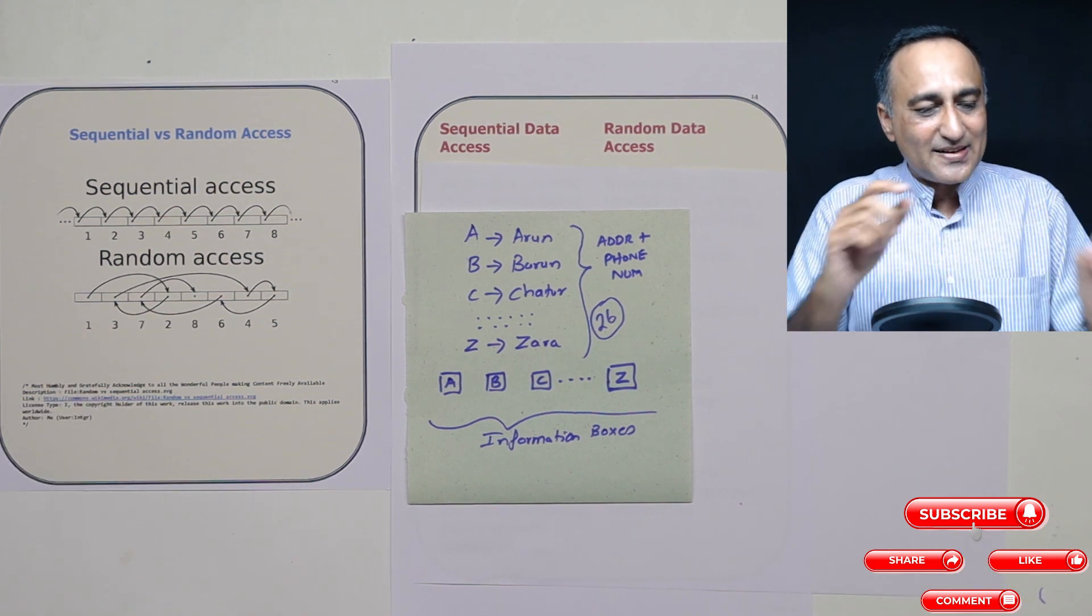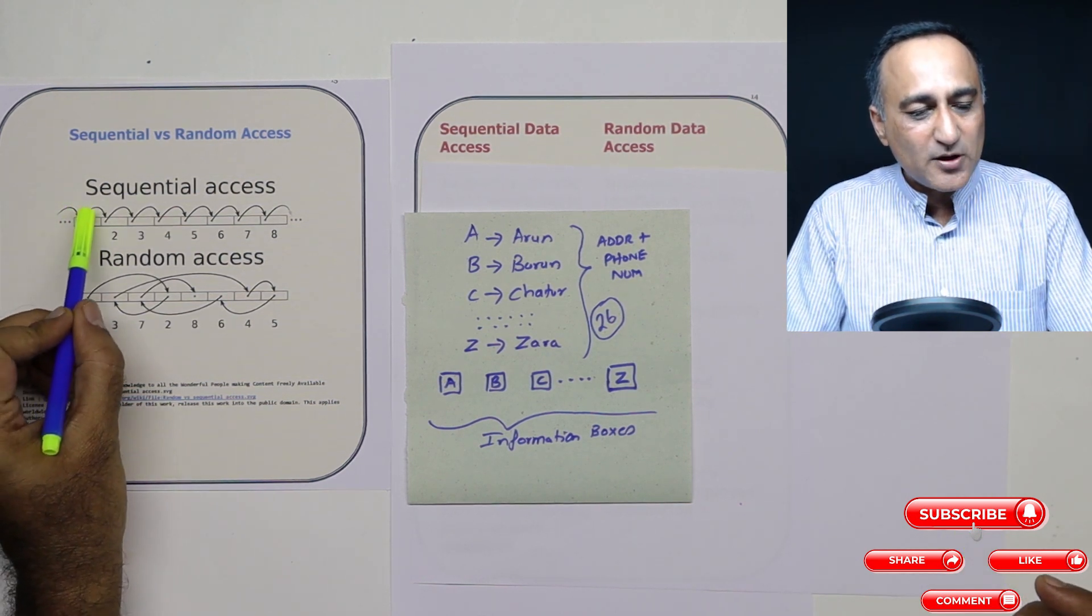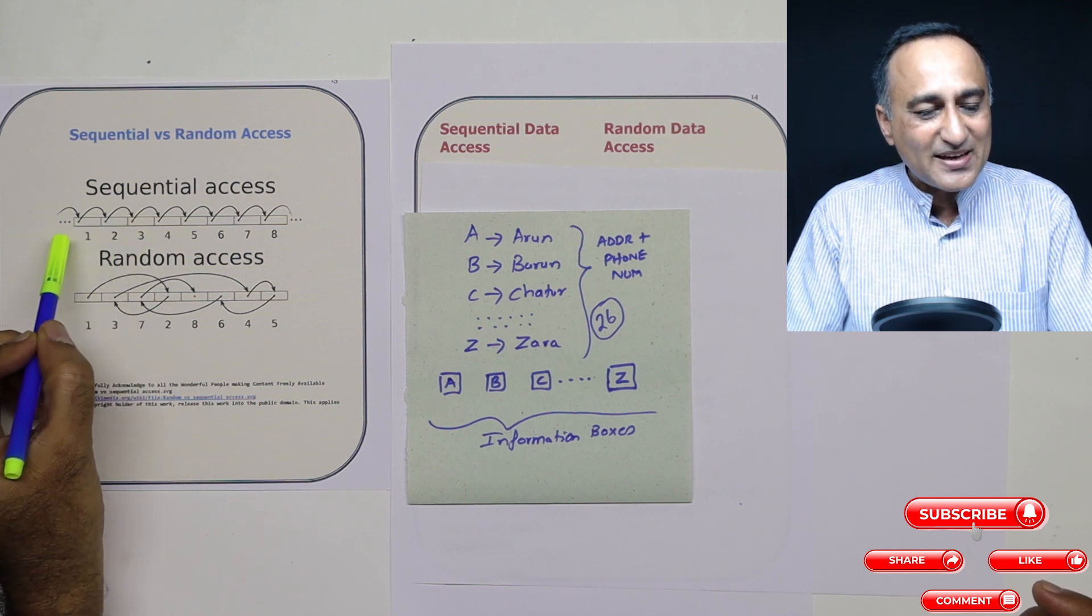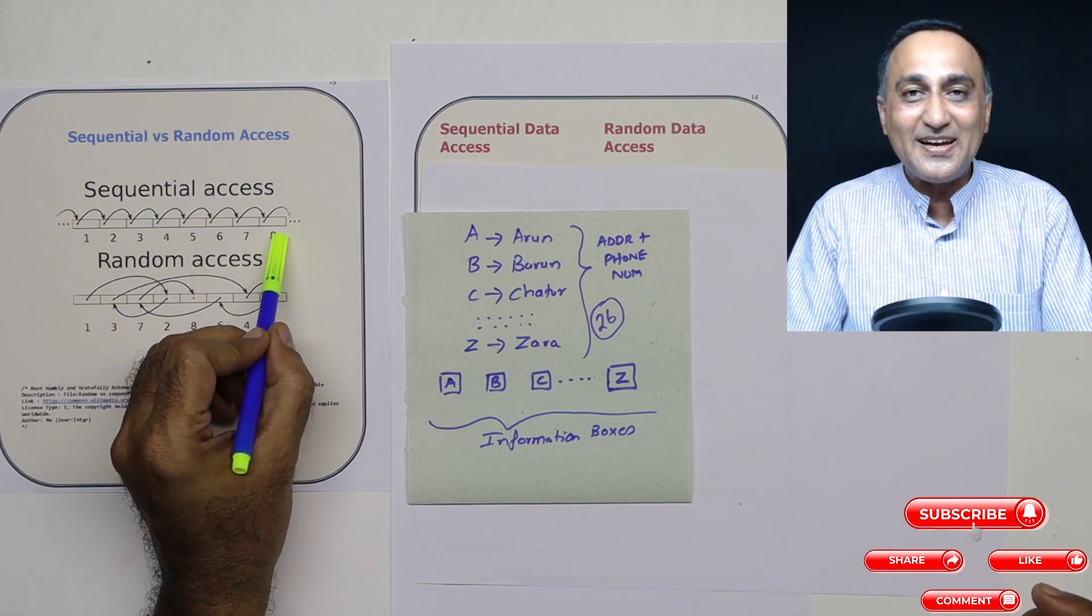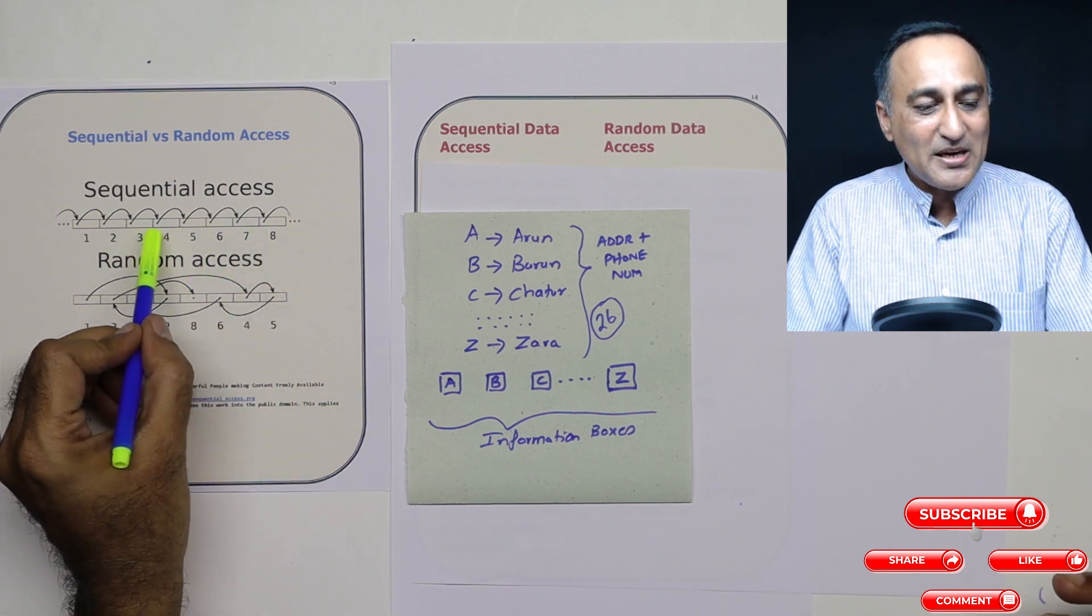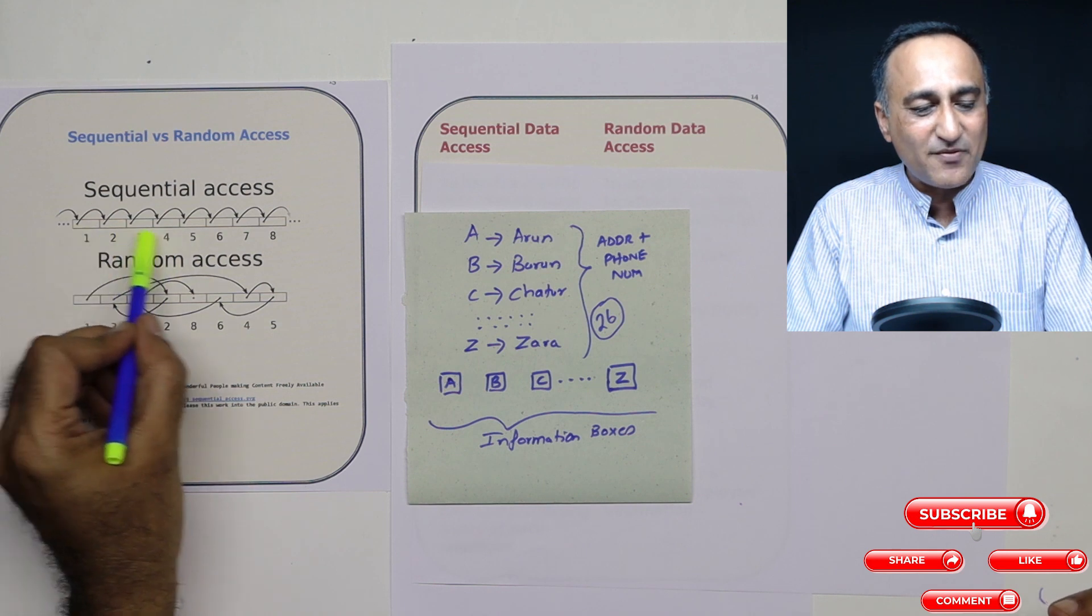So if you look at this diagram by Wikipedia Commons, you can see sequential access like this. So if my luck is good, it may be the first record itself. If my luck is bad, it may be the last record. Or it may be in between. So the average time is somewhere in between.